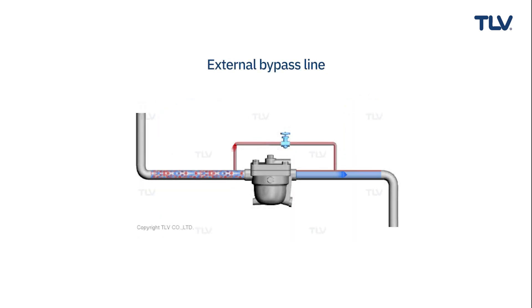An external bypass line is a practical solution to steam locking, by allowing steam to bypass the trap. However, this is not always ideal, as it requires additional installation of the line.